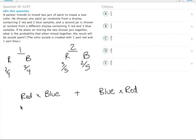So we already established red is two out of four from the first one, and blue from the second one is two out of five. Blue from the first one is two out of four, and red from the second one is three out of five.